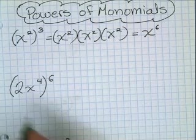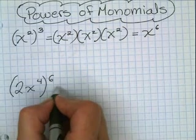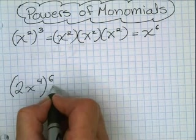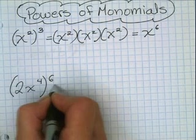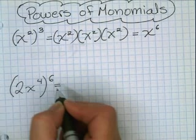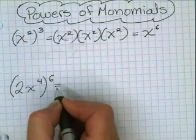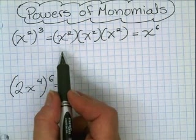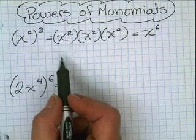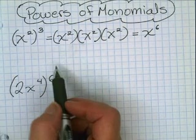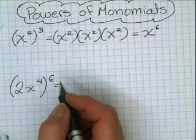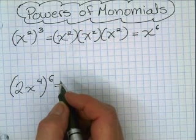In the second example, 2x to the fourth power, all raised to the sixth power, could be written out the long way, as we did in the first example: 2x to the fourth times 2x to the fourth, 2x to the fourth, and so on. But there is a shorter way of solving these problems.